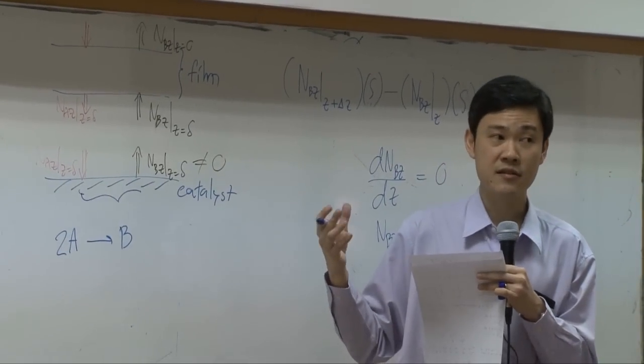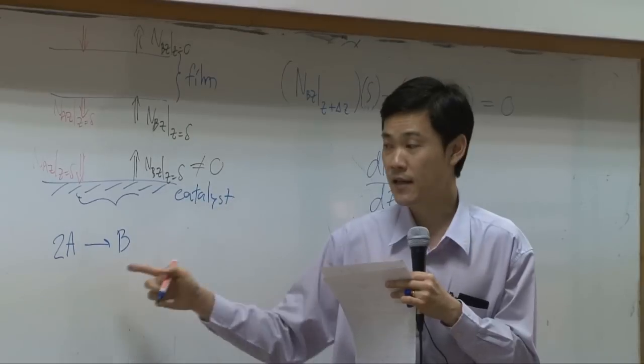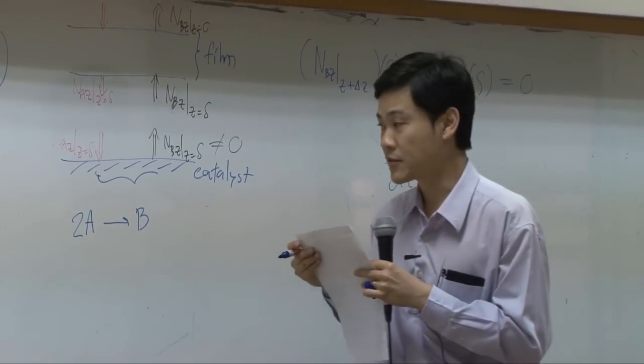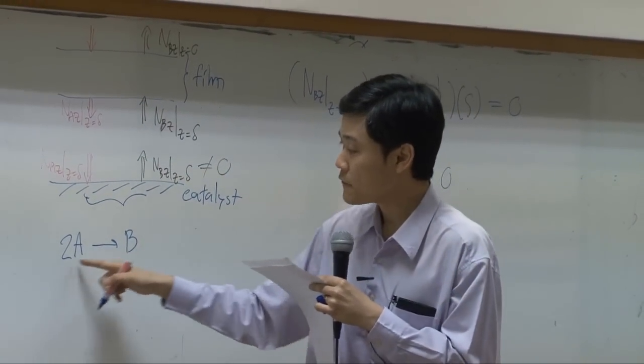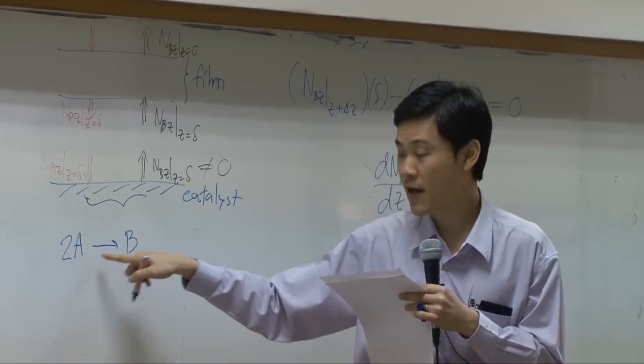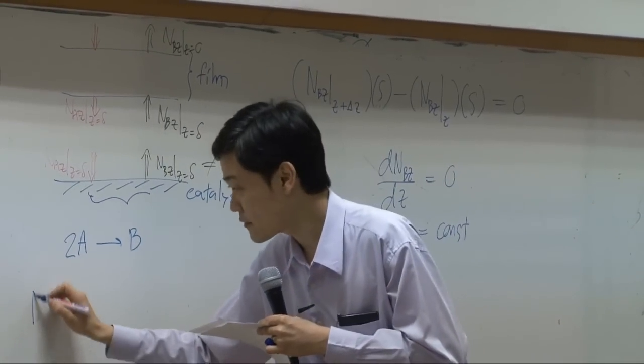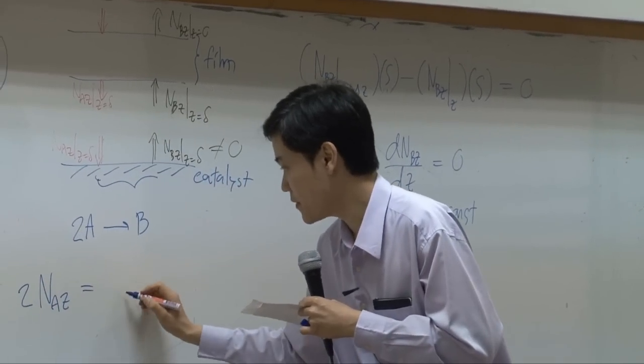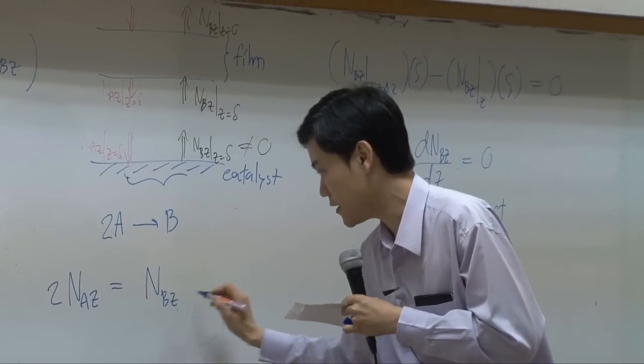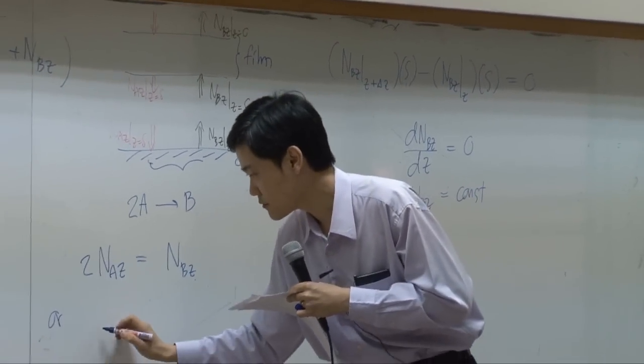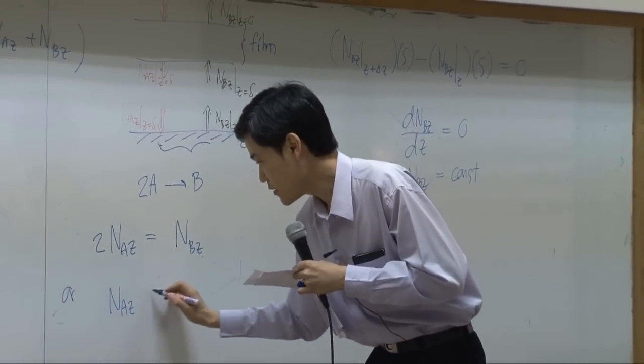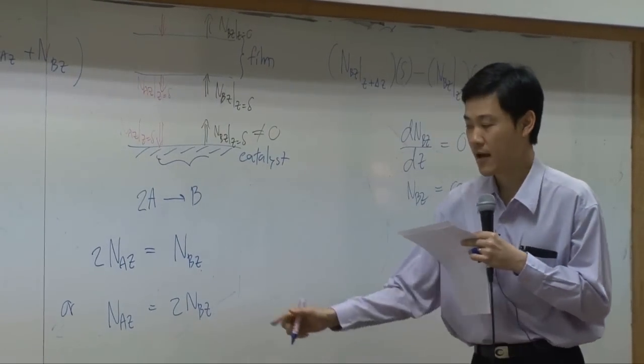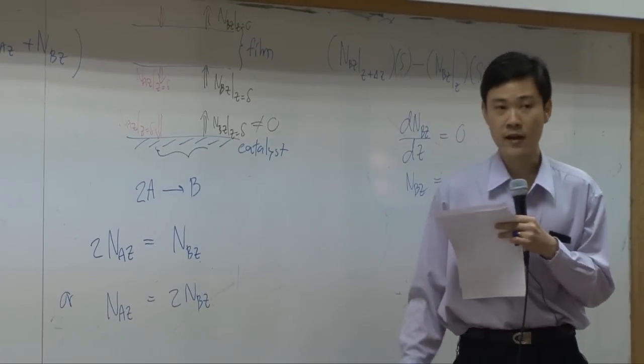So your guess supposed to be something related to stoichiometry ratio. So let me ask you this. If the stoichiometry ratio is 2A becomes B, do you think you get 2N_A_Z equal to N_B_Z or 2 of the N_B_Z equal to N_A_Z? Which one is correct?